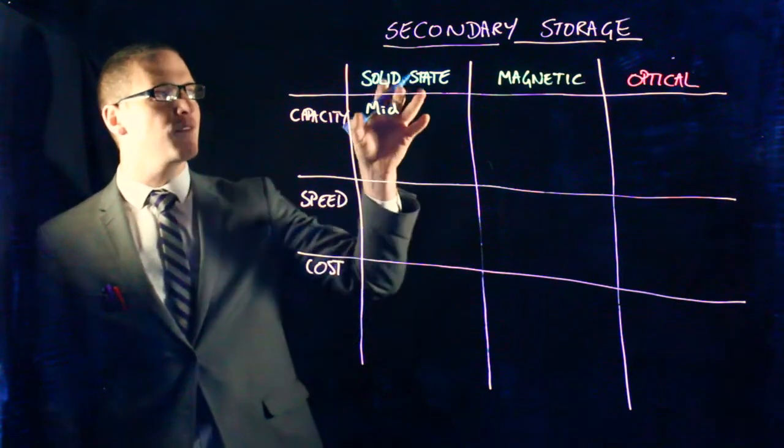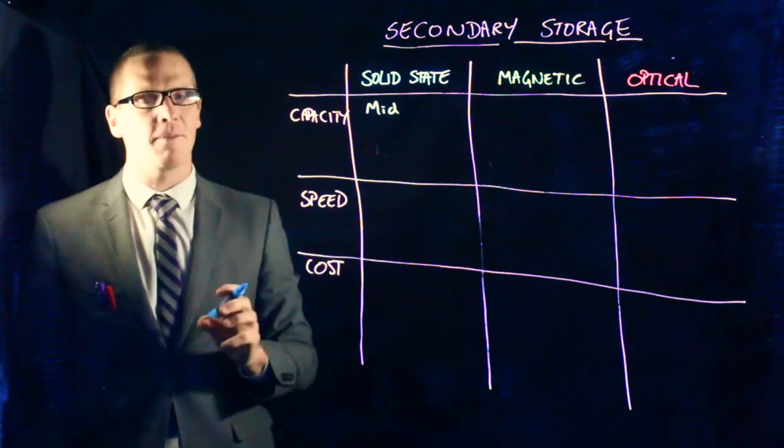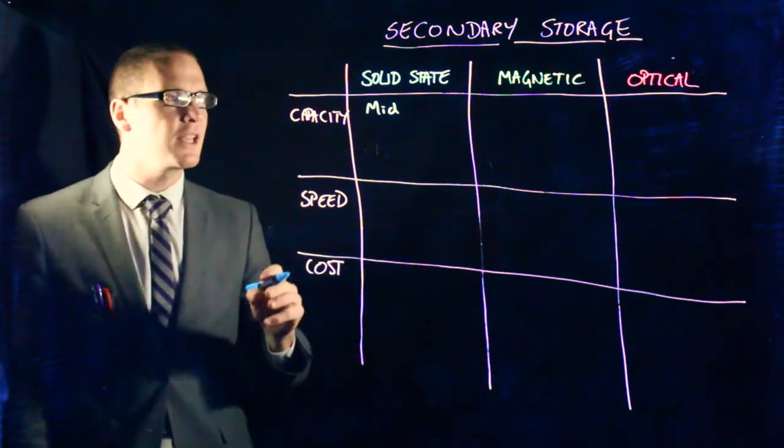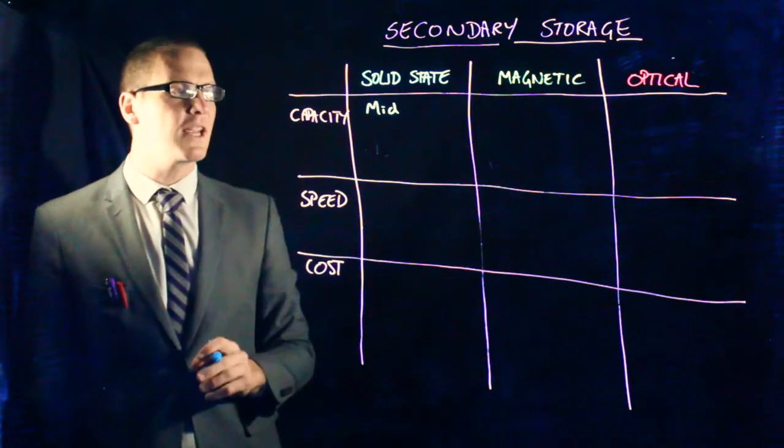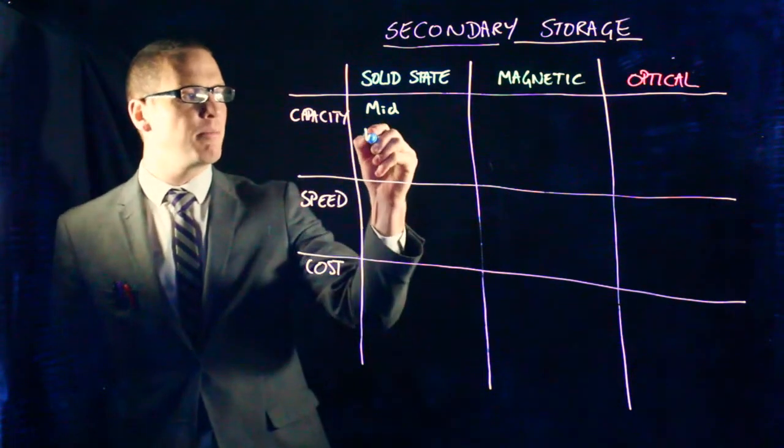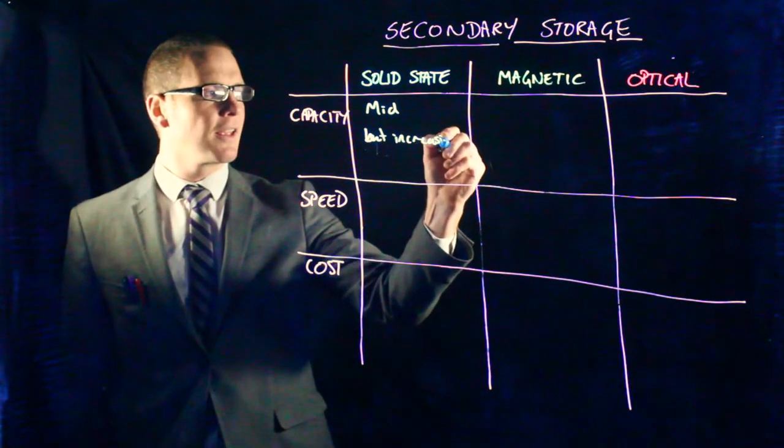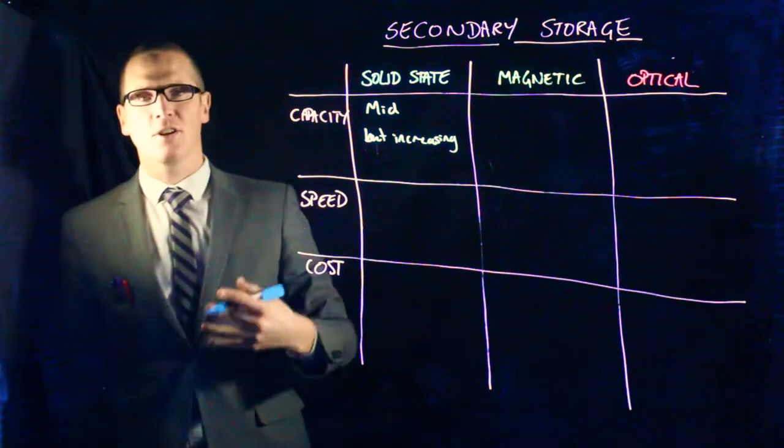But solid state in terms of your main secondary storage device in the computer, you're looking at 120 gig, 240, half terabyte, one terabyte solid state drives. So the capacity is mid, but increasing as technology develops.